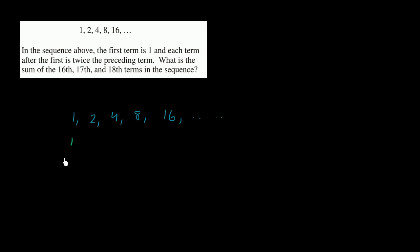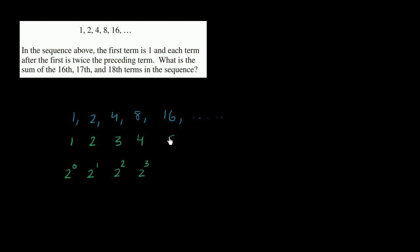So the first term here — one way to think about it is that this is 2 to the 0 power. And then our second term right over here, this is 2 to the first power. And then our third term right over here, this is 2 to the second power. Our fourth term here — you see the pattern — this is 2 to the third power. Our fifth term in the sequence, this is 2 to the fourth power.